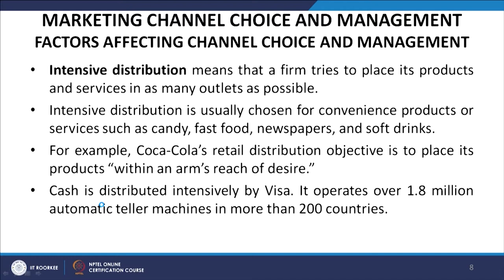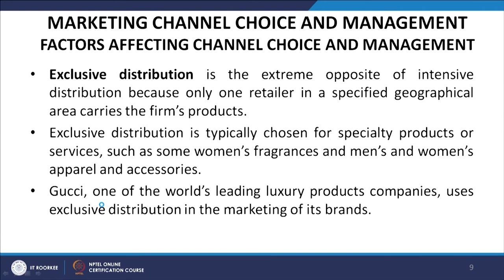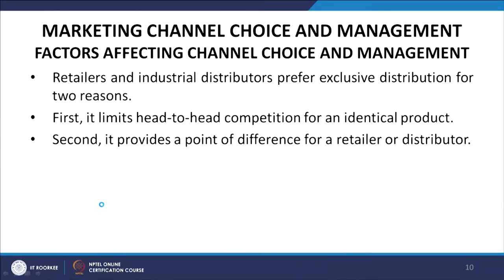Coca-Cola's retail distribution objective is to place its products within an arm's reach of desire. Cash is distributed intensively by Visa, which operates over 1.8 million automatic teller machines in more than 200 countries. Exclusive distribution is the extreme opposite of intensive distribution — only one retailer in a specified geographic area carries the firm's products. It is typically chosen for specialty products such as women's fragrance and men's and women's apparel and accessories.